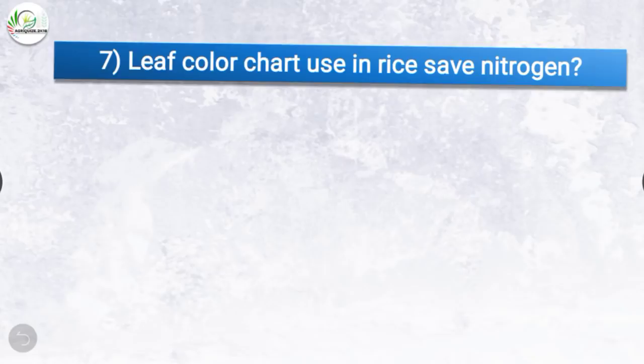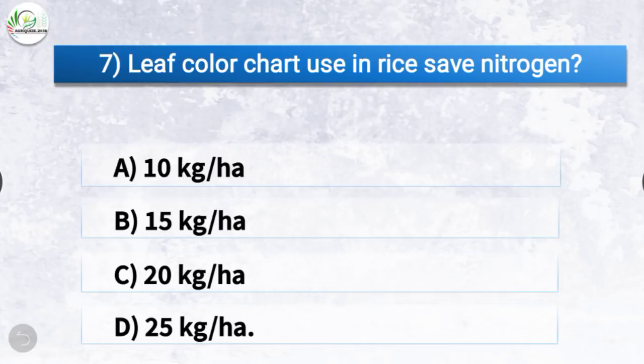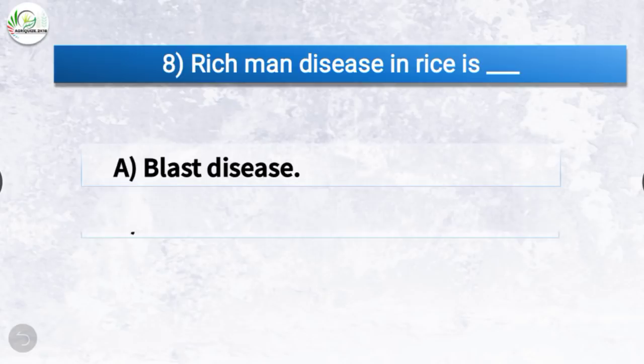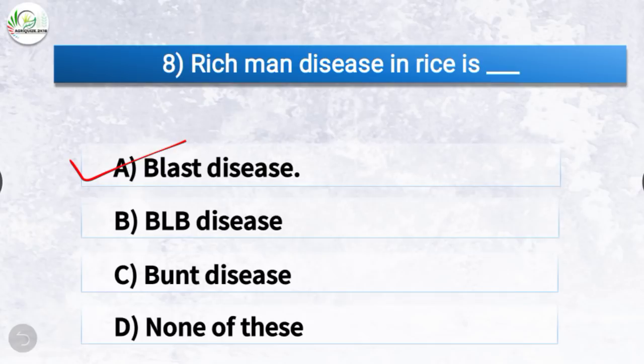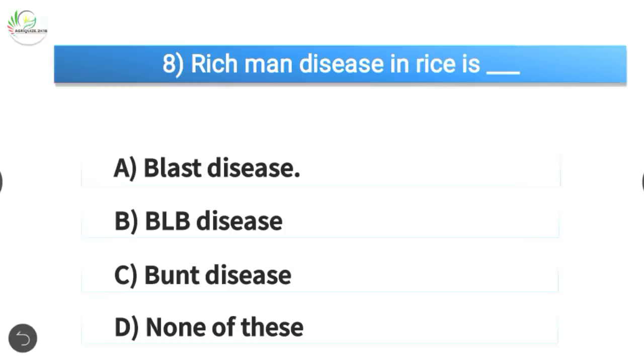Question number seven: Leaf color chart used in rice saves how much nitrogen? The correct answer is option B, 25 kg per hectare. Question number eight: Rich man disease in rice. The correct answer is option A, blast disease. Rich man disease in rice is blast disease.